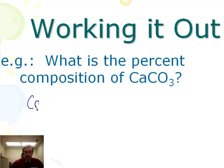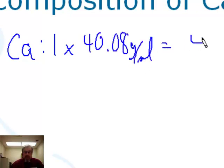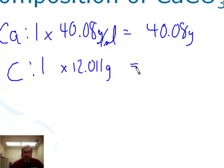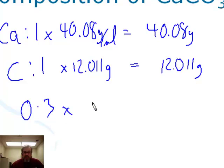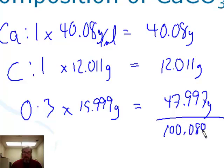Here's the answer. Calcium: subscript of 1, molar mass 40.08 grams per mole, giving a total mass of 40.08 grams. Carbon: 1 times 12.011 grams per mole, giving 12.011 grams. Oxygen: subscript of 3, at 15.999 grams per mole, gives 47.997 grams. Summing these three gives a total molar mass of 100.088 grams for calcium carbonate.